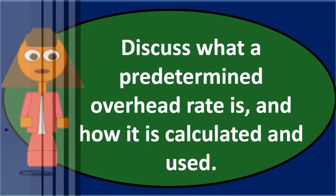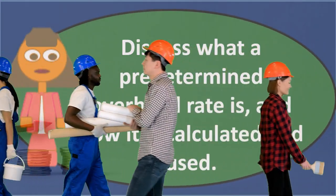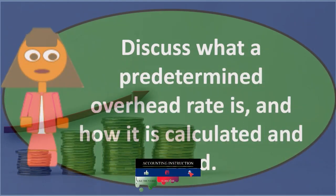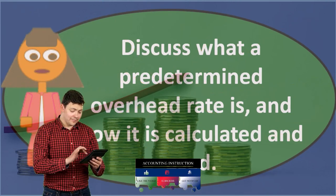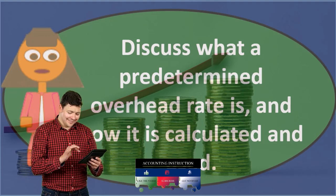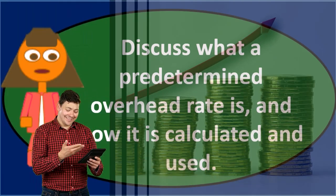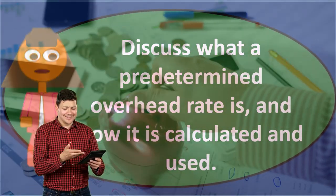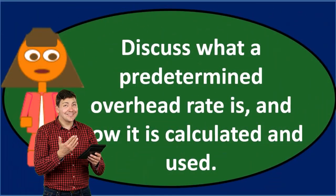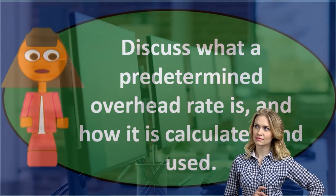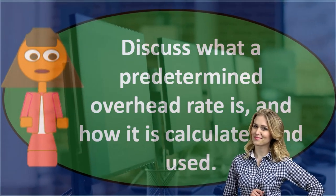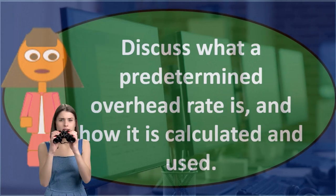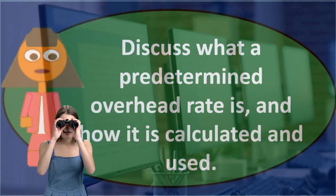Once we have the predetermined overhead rate, we apply it to each job. Each job will have direct material and direct labor tracked to it, and then we multiply the predetermined overhead rate by the cost driver — such as direct labor — to get the amount of overhead allocated to that job. Remember, overhead doesn't relate directly to direct labor specifically, but direct labor is used as a ratio to see how large one job is relative to another, and therefore apply more estimated overhead to larger jobs and less to smaller ones.